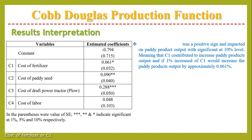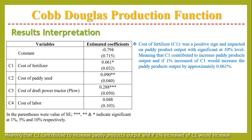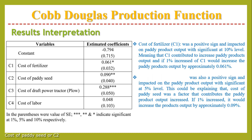Cost of fertilizer, or C1, was a positive sign and had an impact on paddy product output, with significance at the 10% level, meaning that C1 contributes to increased paddy product output. If there is a 1% increase in C1, it would increase the paddy product output by approximately 0.061%.